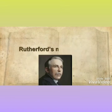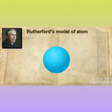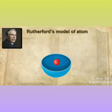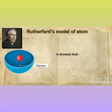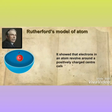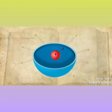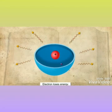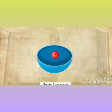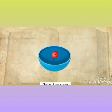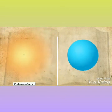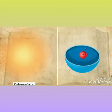The Rutherford model of an atom had a major drawback: it could not explain the stability. It showed that electrons in an atom revolve around a positively charged center called the nucleus. However, it was later found that any particle in circular motion would undergo acceleration and the electron loses energy. The electrons would take a spiral path and would finally fall into the nucleus, and the atom would collapse — but that does not take place in reality.